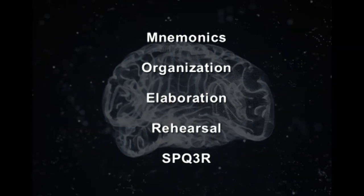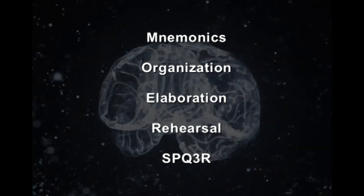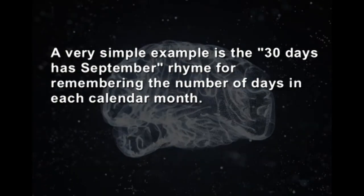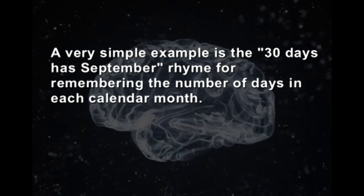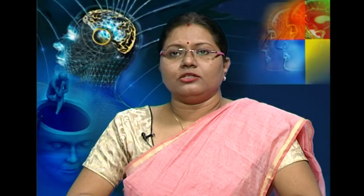There are five major techniques for improving our memory. The first technique is mnemonics. A mnemonic is a word for a memory tool for improving memory. Mnemonics are techniques for remembering information that is otherwise quite difficult to recall. A simple example is '30 days has September,' a rhyme for remembering the number of days in each calendar month. The idea behind mnemonics is to encode difficult-to-remember information in a way that is much easier to remember.